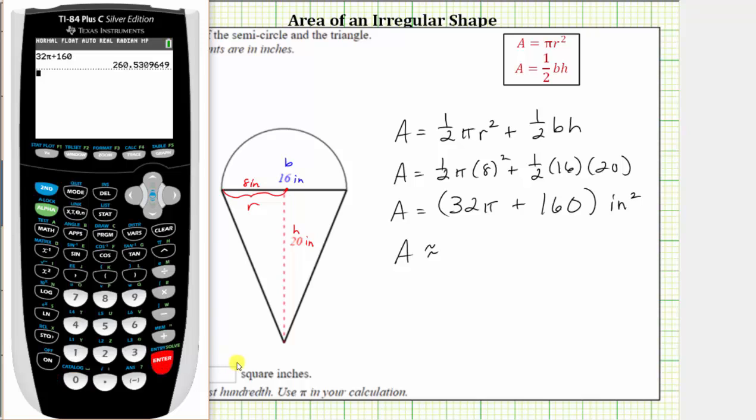We're asked to round to the hundredths place value, which is two decimal places. Notice how there's a zero in the thousandths place value, which means you round down, and therefore the total area is approximately 260.53 square inches.